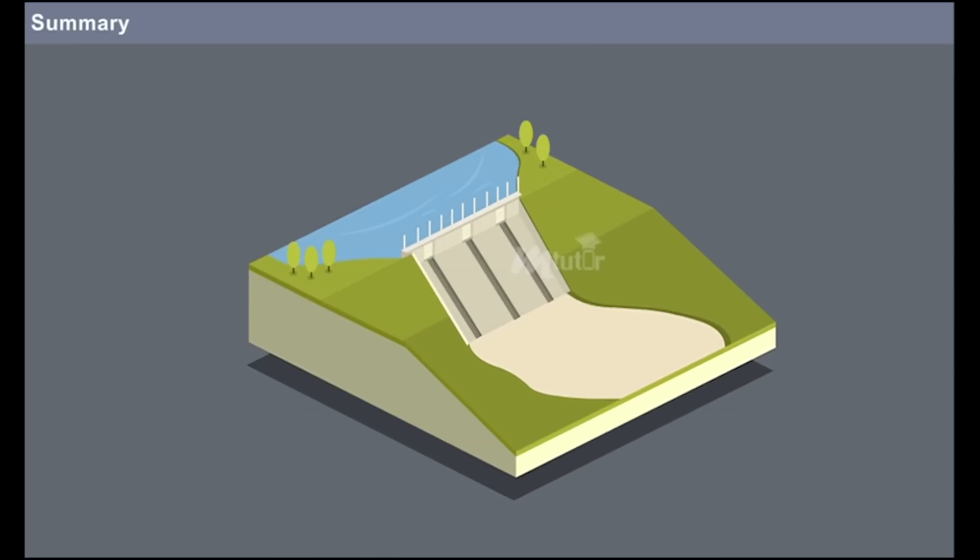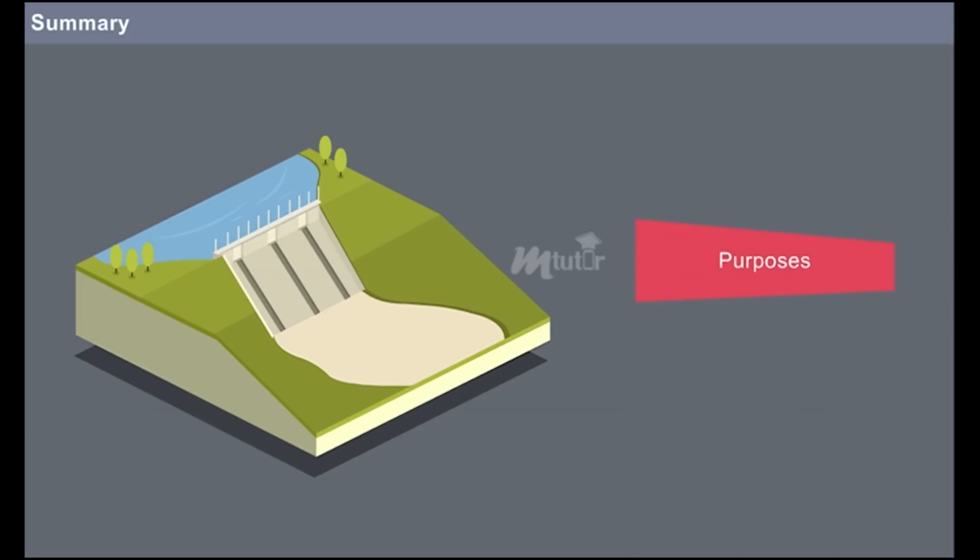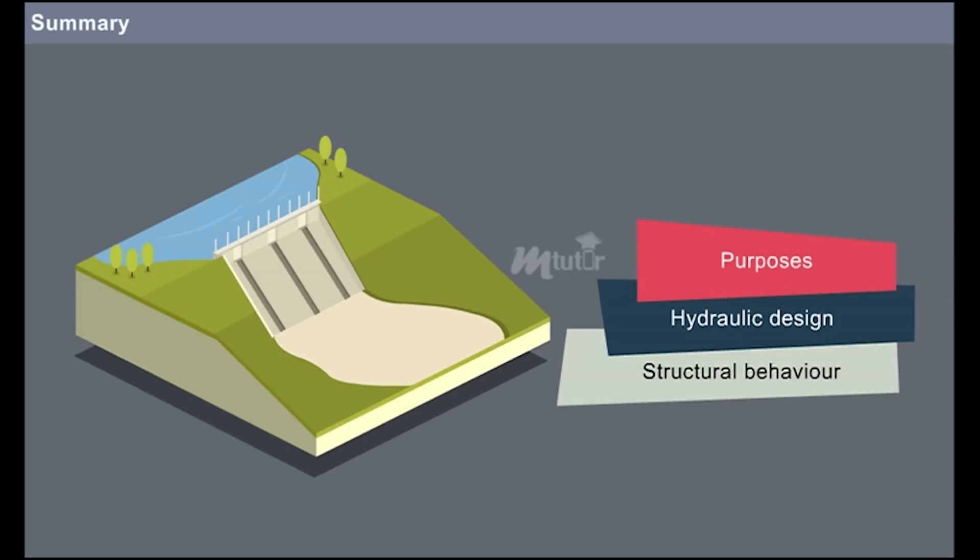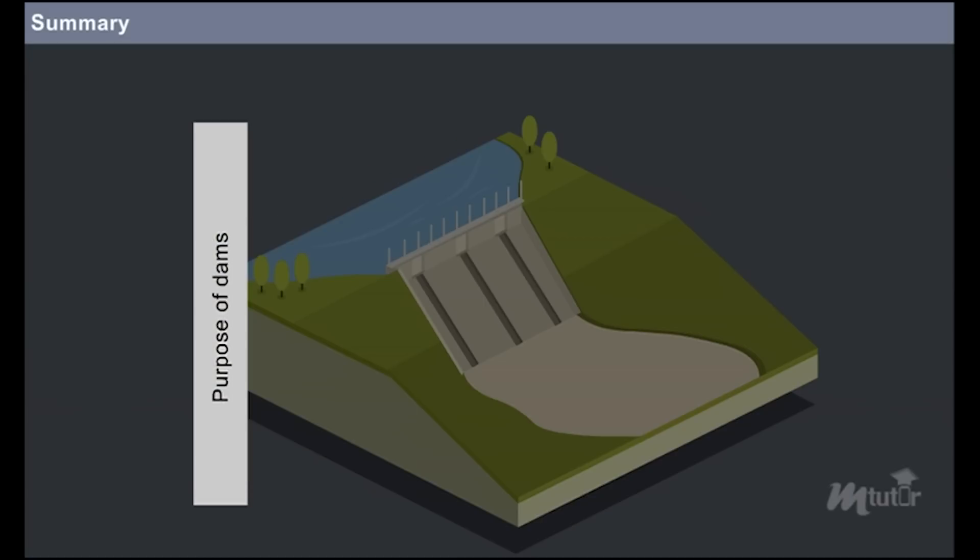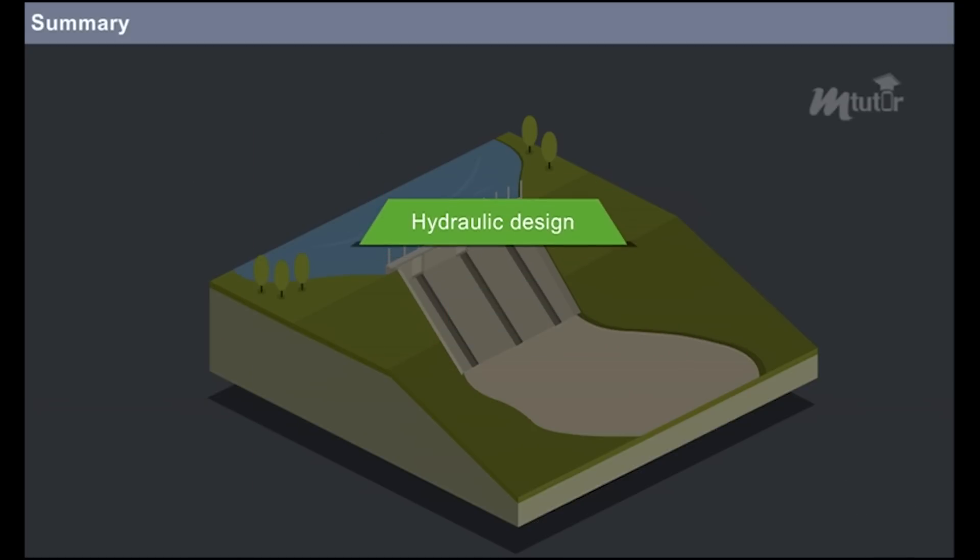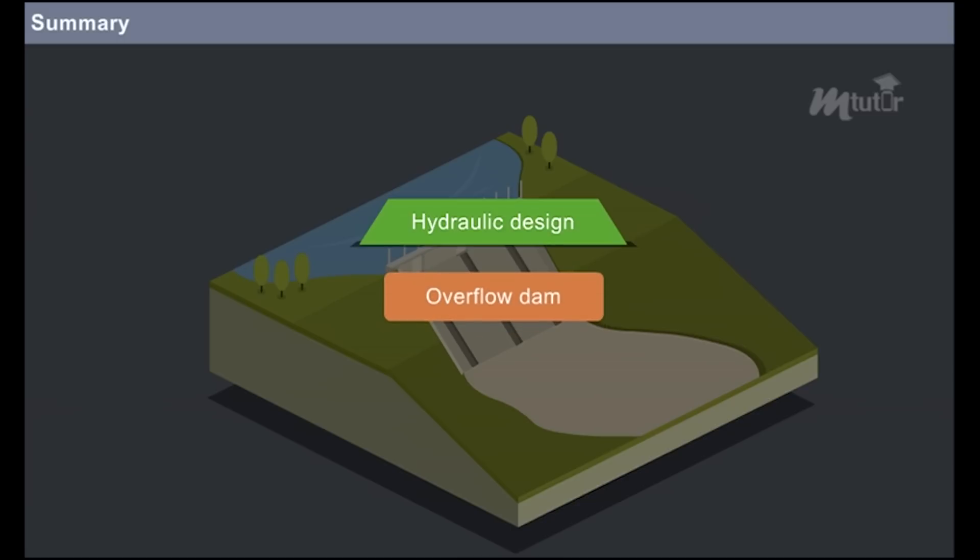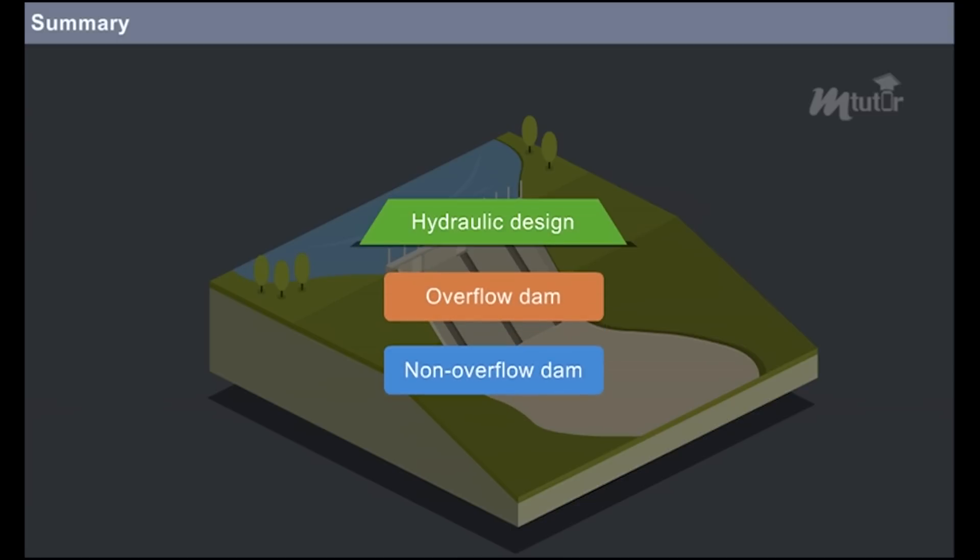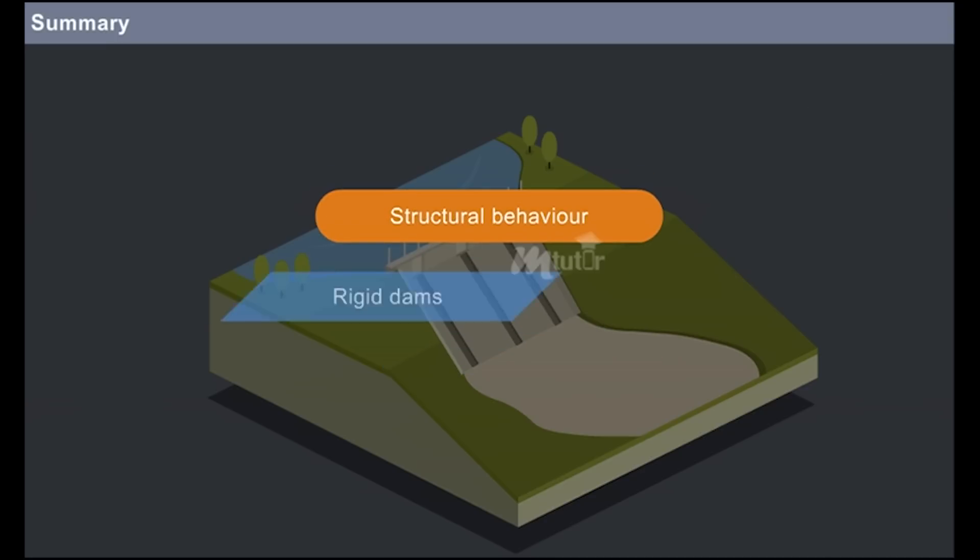Summary: Dams are classified according to purpose, hydraulic design and structural behaviour. Based on the purpose, the dams are categorised as storage dam, diversion dam and detention dam. Based on the hydraulic design, dams are categorised as overflow dam and non-overflow dam. Based on the structural behaviour, dams are categorised as rigid dams and embankment dams.